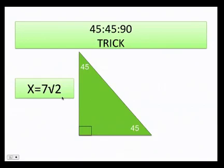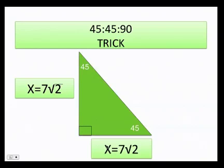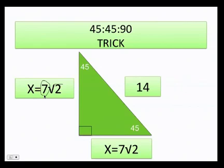What if one leg is 7√2? The other leg is also 7√2. To find the hypotenuse, just multiply 7 by 2, giving 14. This shortcut is especially useful when taking timed tests like the GRE, GMAT, SAT, or ACT.